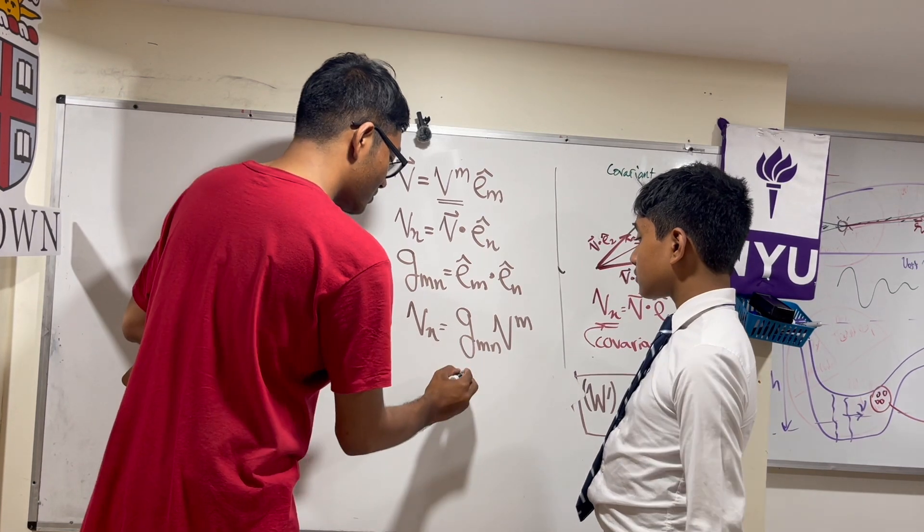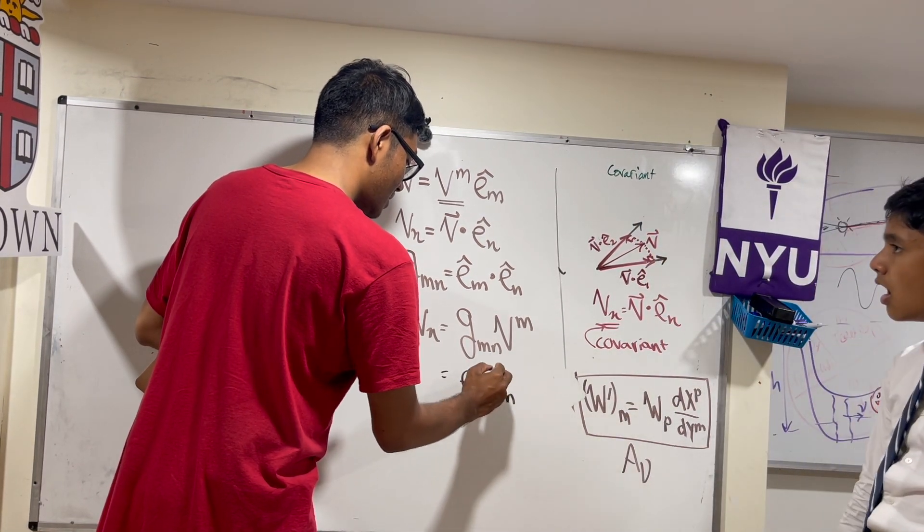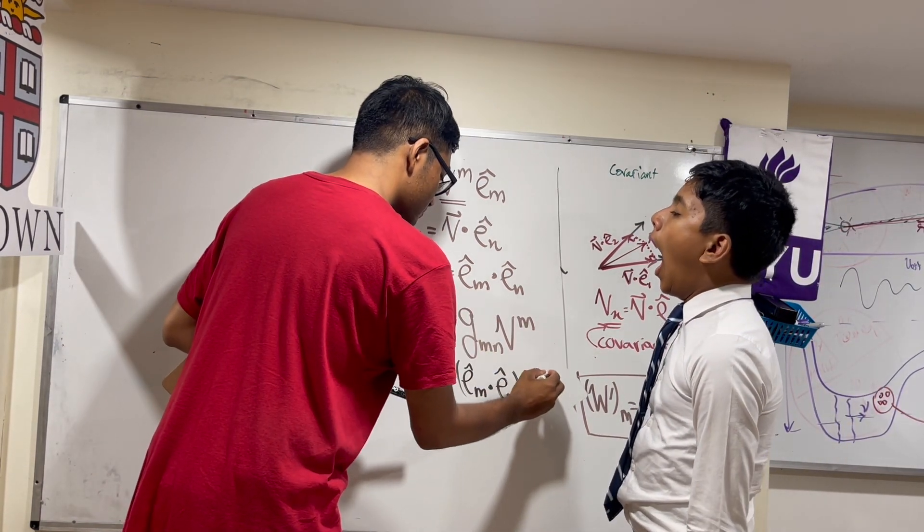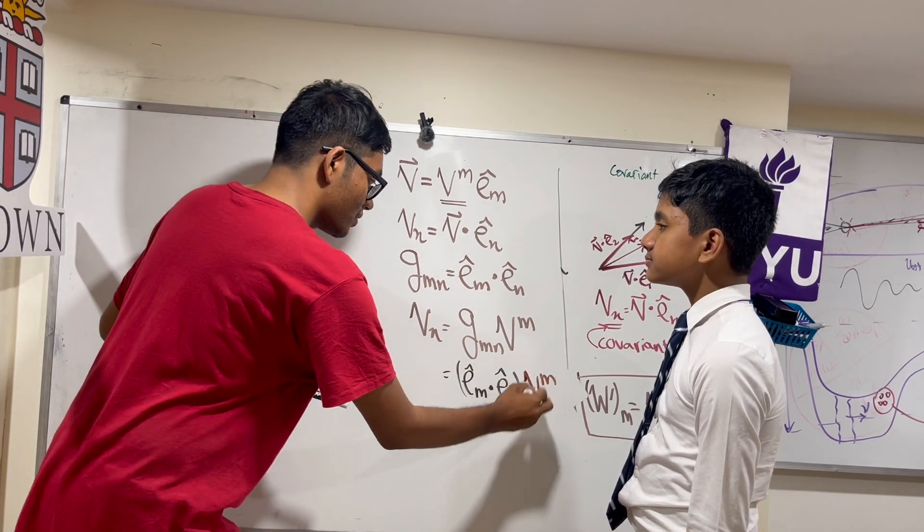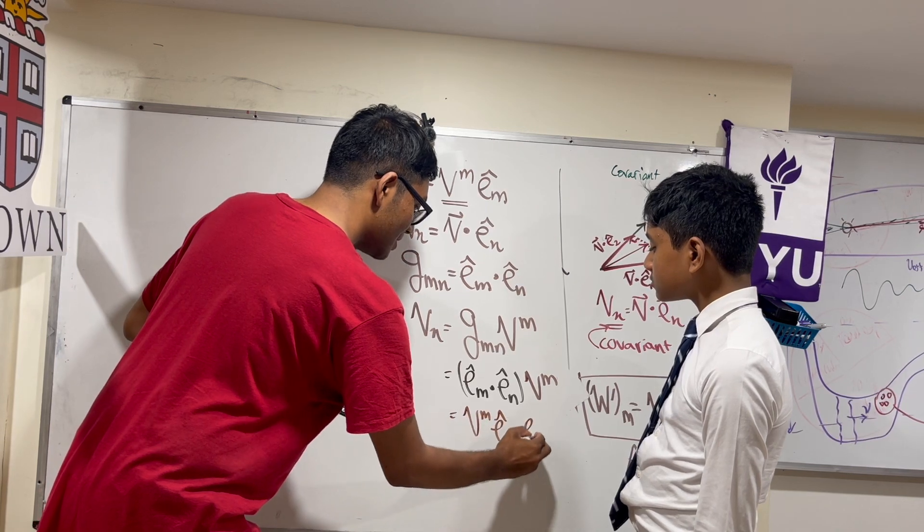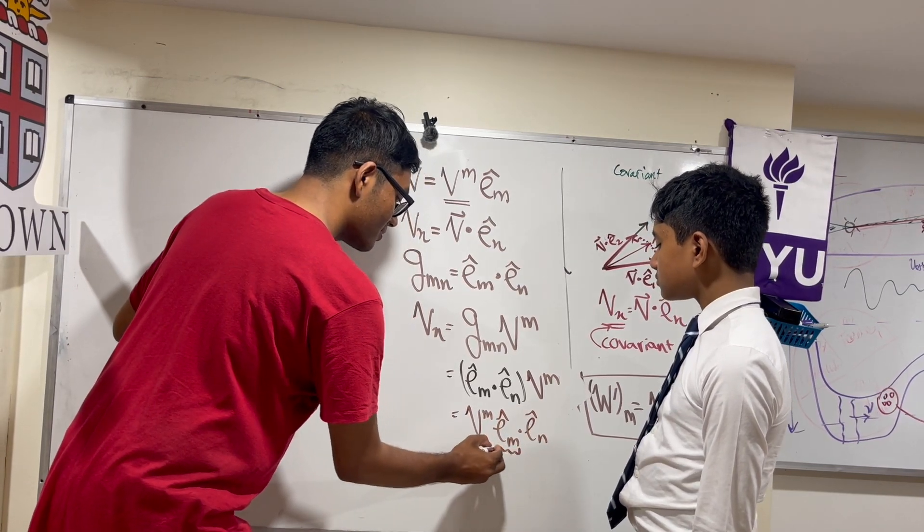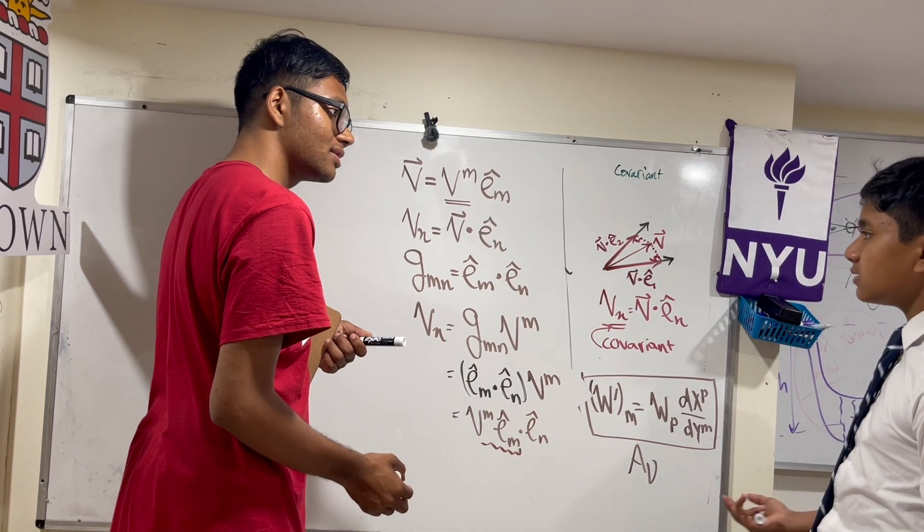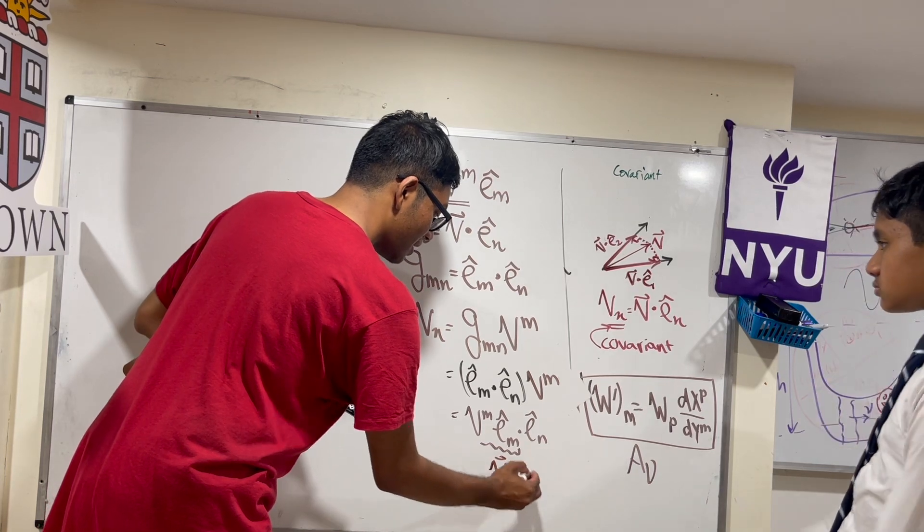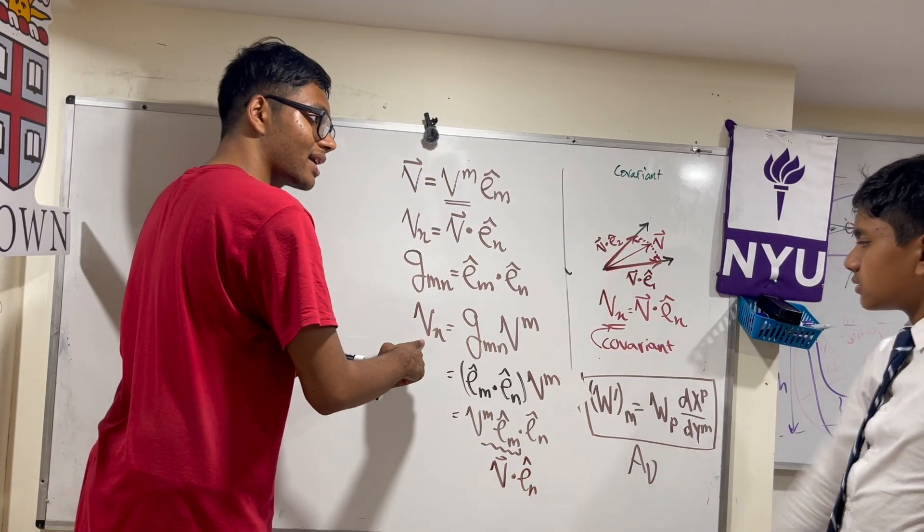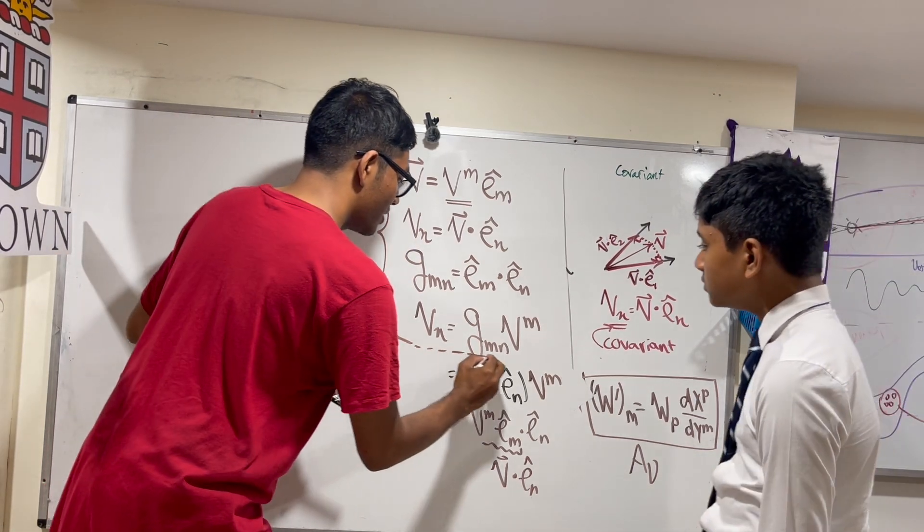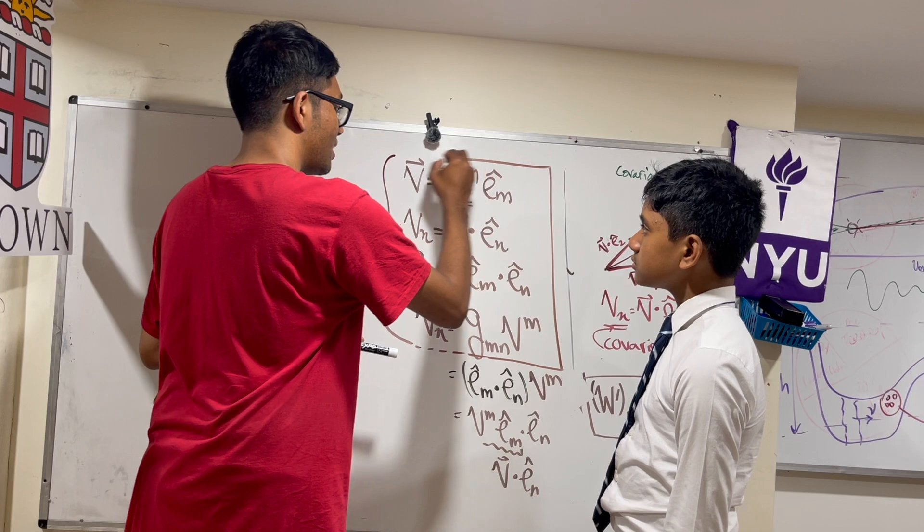Well, just check it out. You can just write this as e sub m, e sub n dotted with each other and then multiply that with v sub m. And so, if I take v sub m out here and this is v sub m, e sub m dotted with e sub n. But what is v sub m times e sub m? Wait, how are we already calculated that? Exactly. That's just v. So, this is just v dotted with e sub n. And of course, that gives us back the covariant components. So, these are the four relations, the four big relations that we have discovered today.